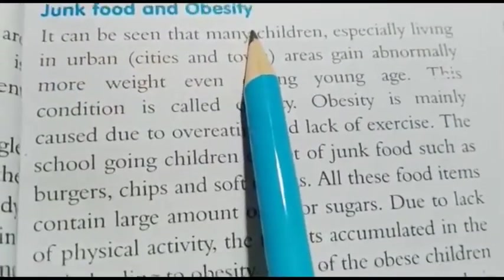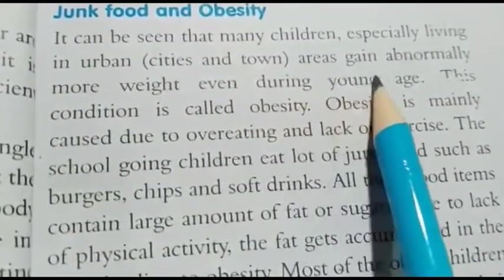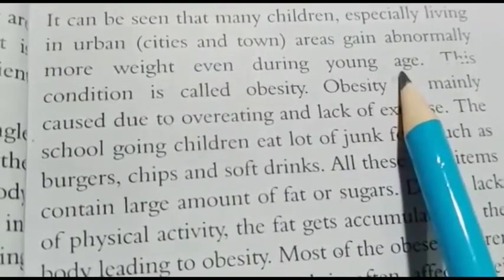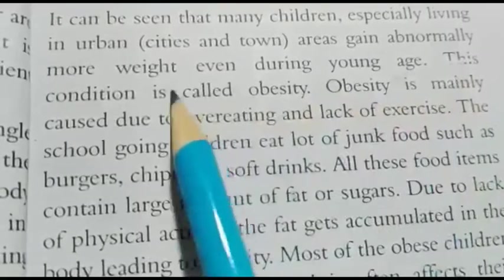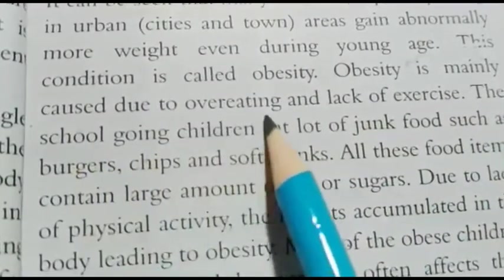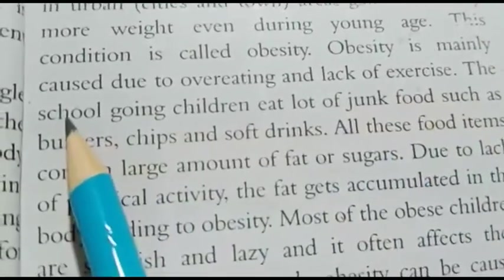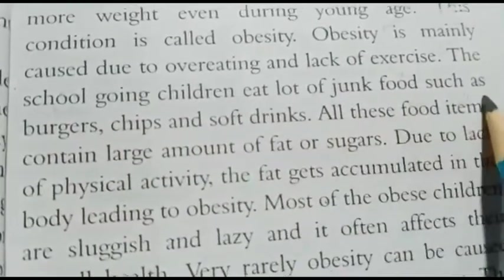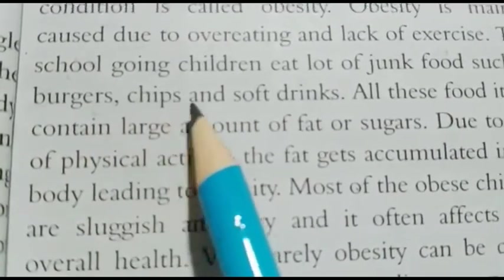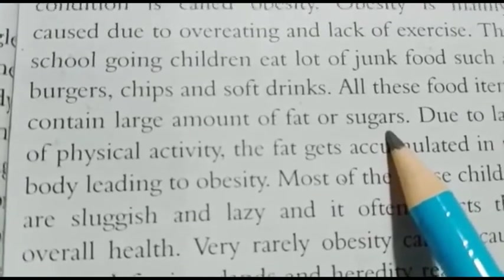Next topic is junk food and obesity. Many children, especially living in urban areas — cities and towns — gain abnormally more weight even during young age. This condition is called obesity. Obesity is mainly caused due to overeating and lack of exercise. School-going children eat a lot of junk food such as burgers, chips, and soft drinks — all these food items contain a large amount of fat or sugar.